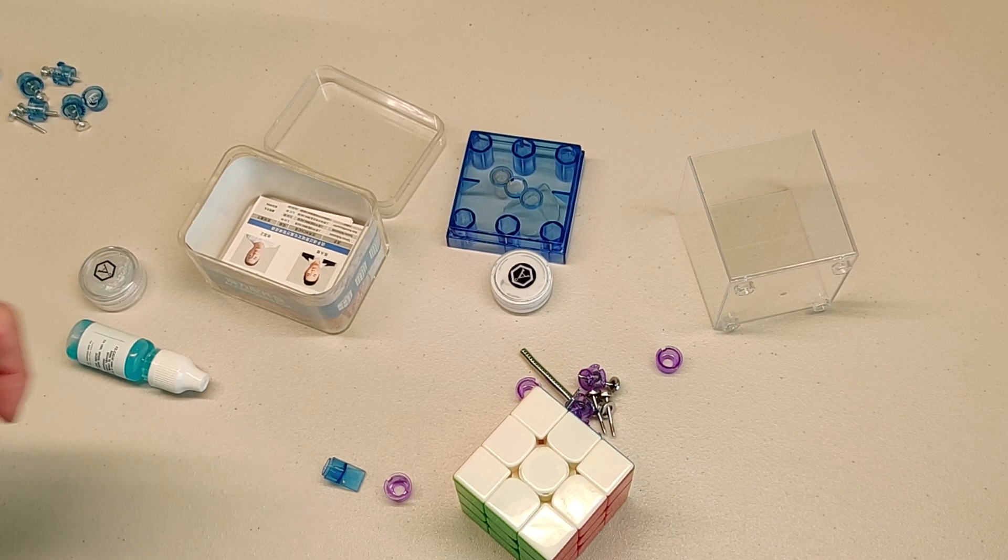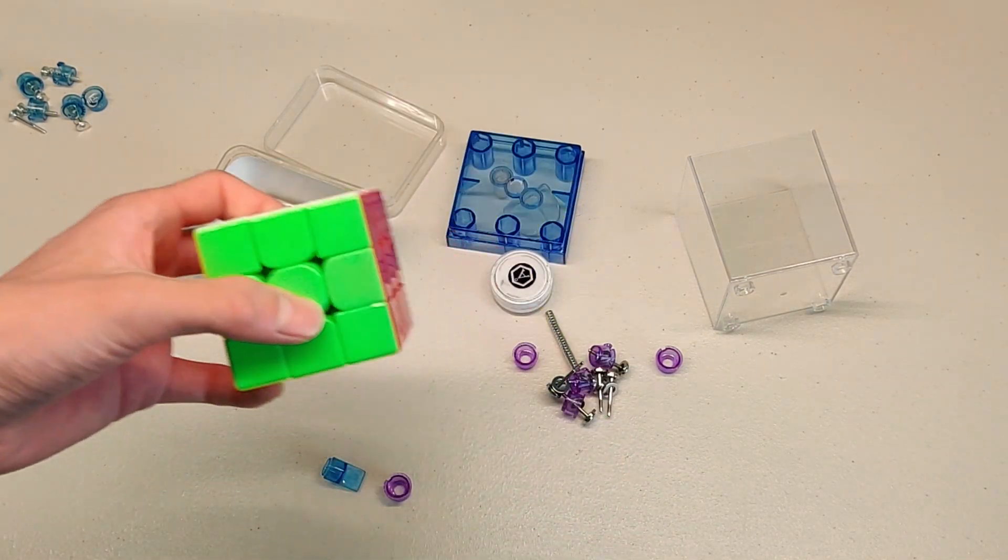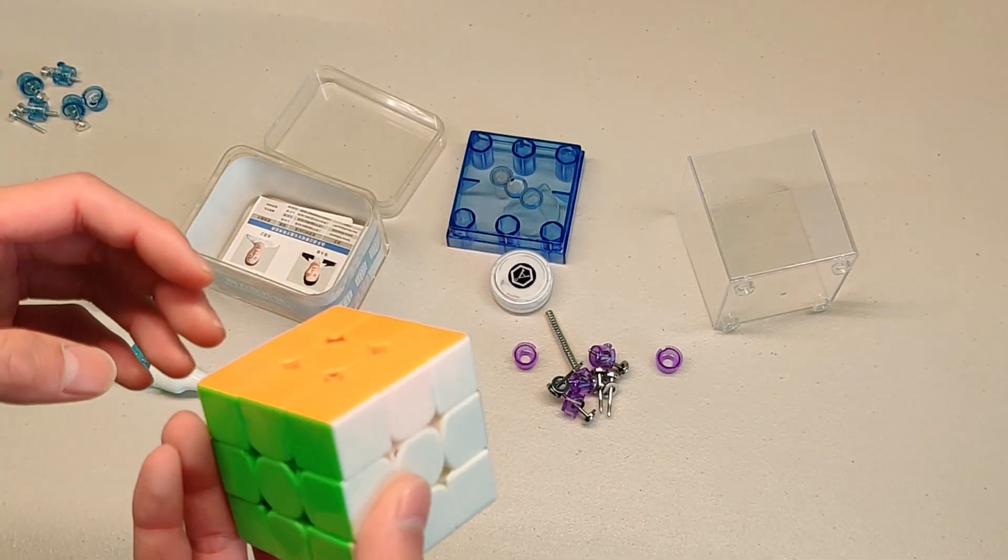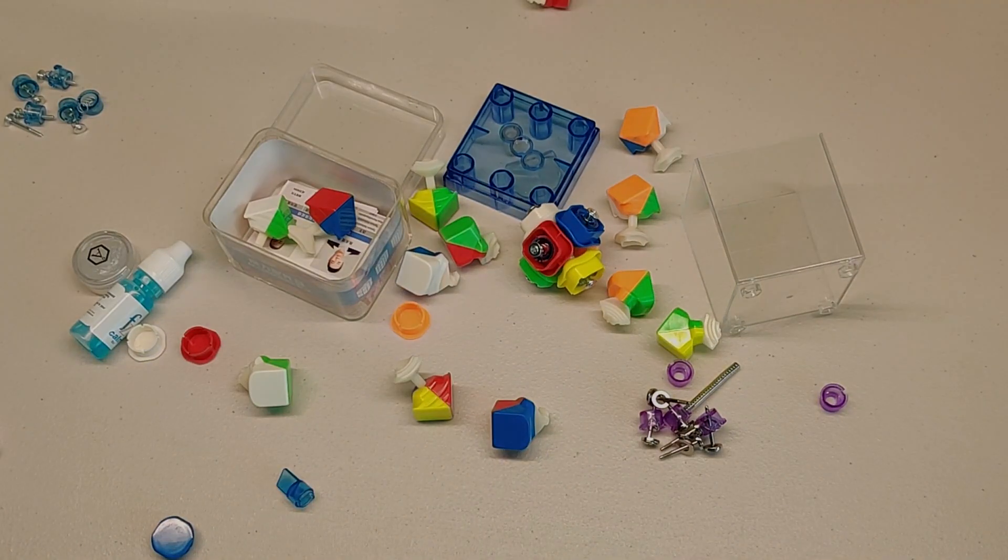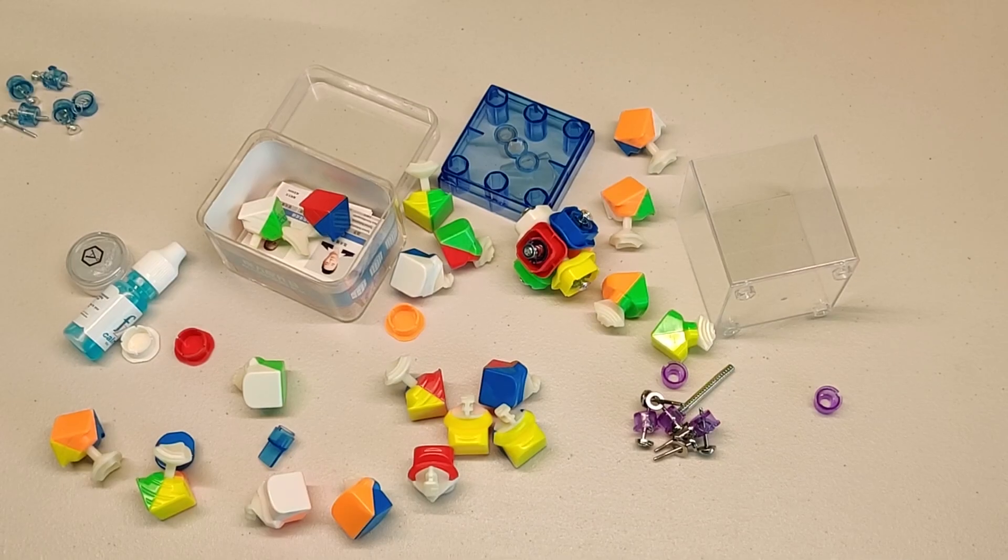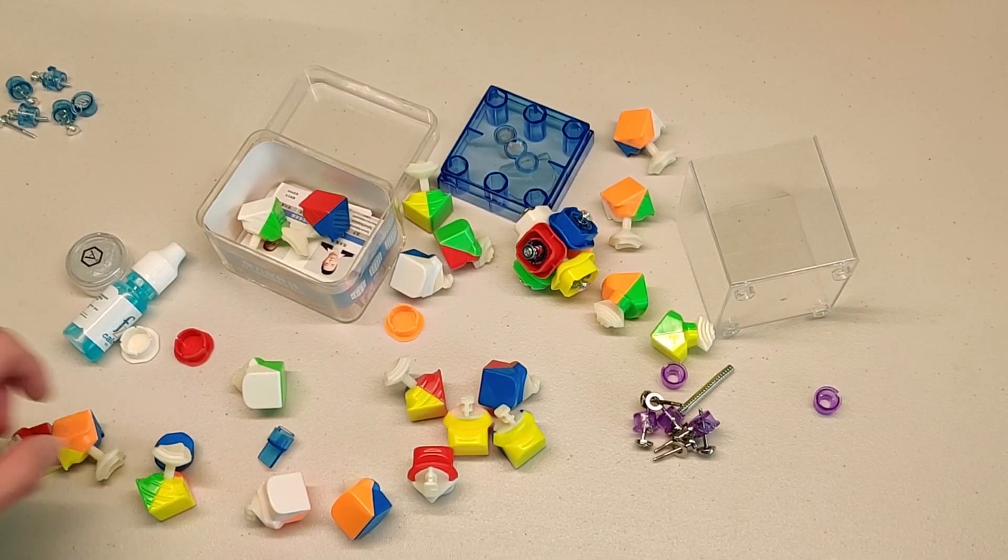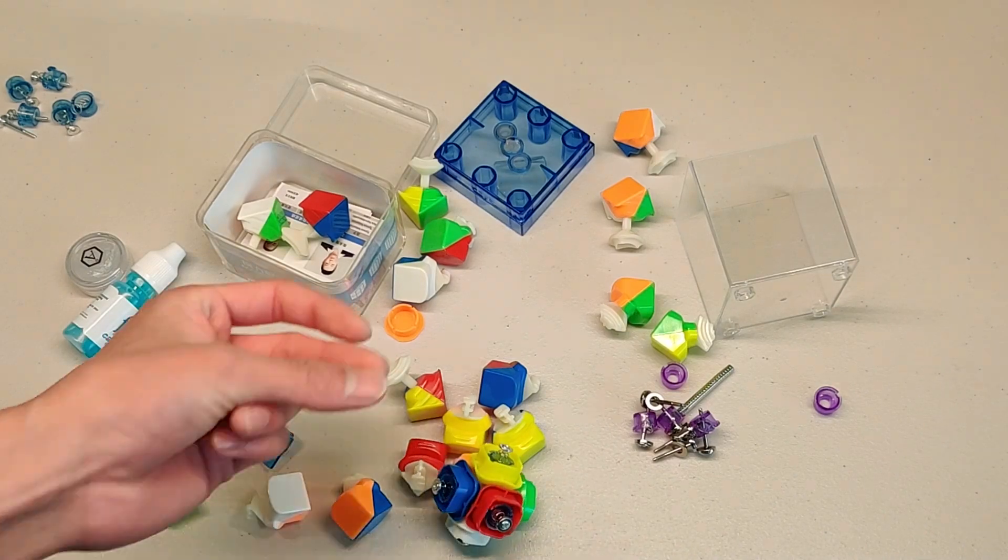So first thing we want to do is replace all the screws in here with maglev stuff. To do that, we're going to need to take apart the cube, so let's just do that real fast. So we got the cube all disassembled other than the core. I still need to unscrew the core.